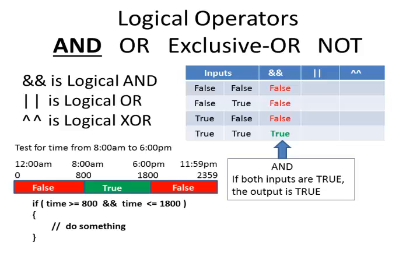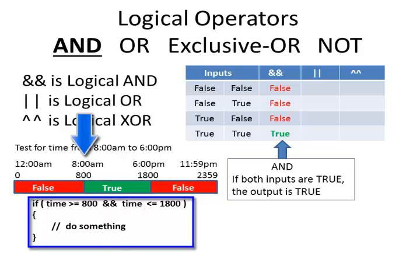Here's an example. I want to find out if it's a daytime charge between 8 in the morning and 6 at night. So I'll say, if time is greater than or equal to 800, and time is less than or equal to 1800, then I'll do something.